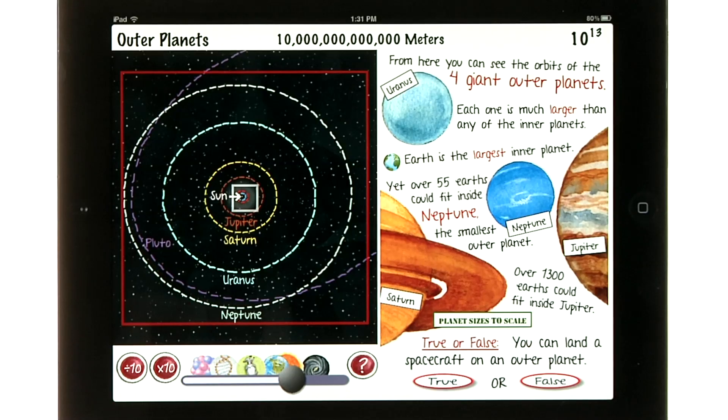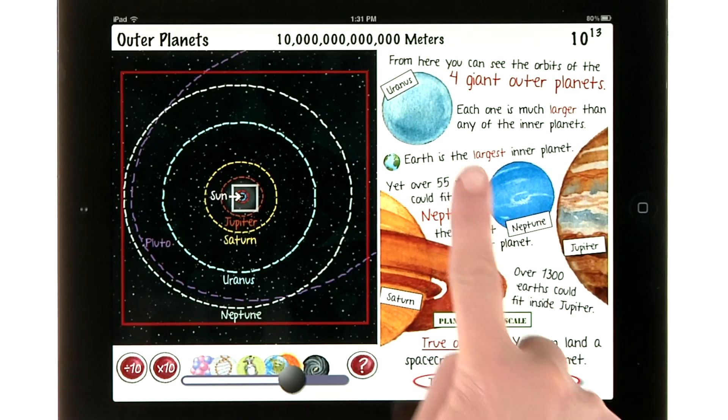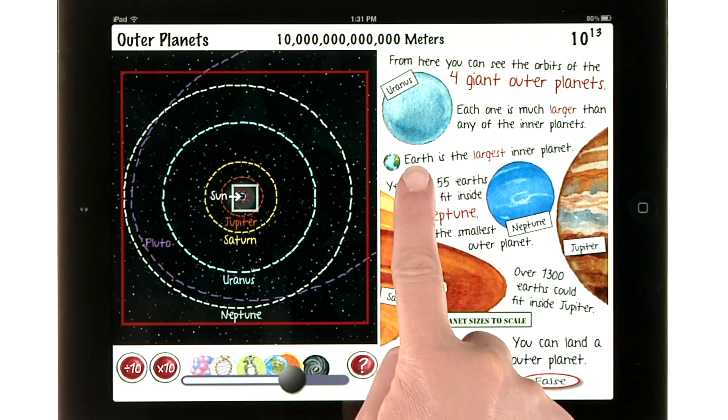just turn the iPad. In this view, we learn how much larger Jupiter and the other three outer planets are when compared to Earth.